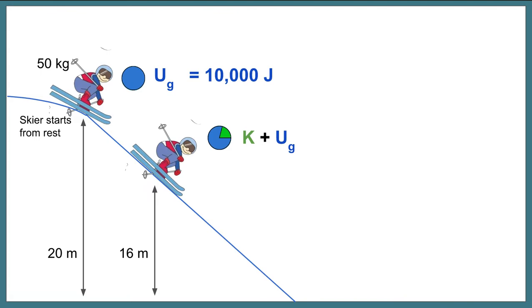But as the skier goes down the hill and he's at a lower point, his gravitational potential energy is going to decrease. You can see that in the pie, how the blue section is a little bit smaller than the whole. And now there's this little green kinetic energy portion. But the pie itself is remaining the same size. The total amount of energy is remaining consistent. It's just changing form.